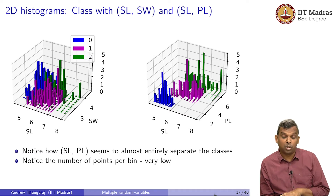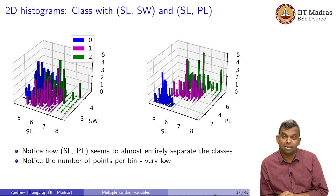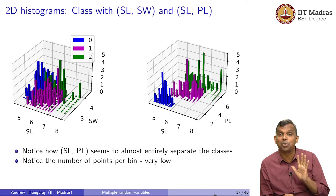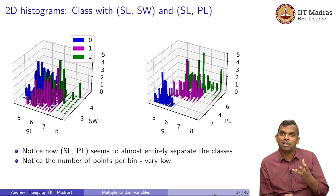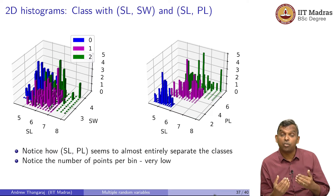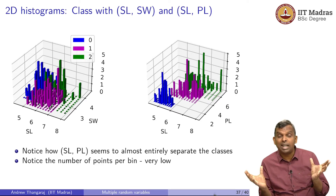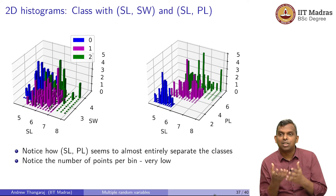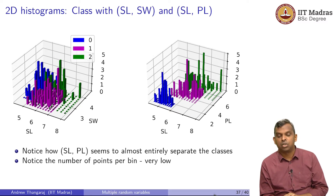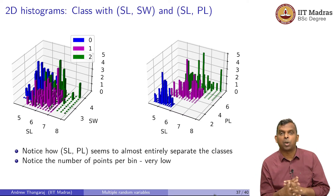A second point I want you to observe — this is very important — is how many points you have in each bin of your 2D histogram. Look at the z-axis: it goes to really low numbers: 0, 1, 2, 3; quite often it is 1, 2, 3, 4; the maximum is 5. Why did that happen? It happened because you have only 50 instances of data for each class. Once you start doing 2D histograms with multiple variables, you need a lot of bins. For SL between 5 and 8, maybe 6 bins; for PL between 2 and 6, maybe 5 or 6 bins — already you have 5 times 5, that is 25 bins in 2 dimensions. With 25 bins and only 50 instances of data, the number of data points that can come into each bin is very, very small. This problem of multiplication of bin numbers is a very big problem, and this is just 2 dimensions.